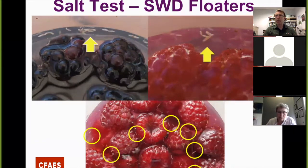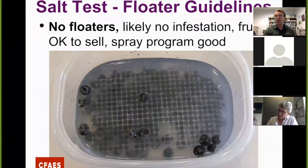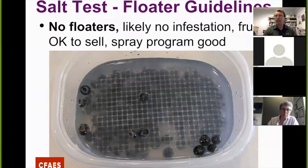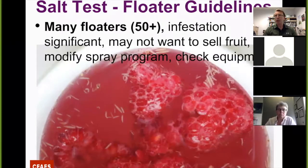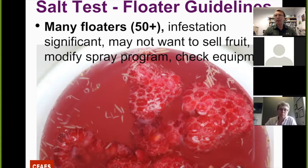Larvae are small, translucent, almost grain-of-rice size or smaller. You can see where there are no larvae floating and you have to look pretty carefully when there's a low population. Typically they get attracted to the edge of the container, so look at that area very closely. With a low infestation level, it's okay to sell the fruit — but you may want to refrigerate it and pay attention to your spray program and spray interval. If you've got hundreds of larvae, that's a situation where you don't want to sell this fruit, and you definitely need to look at modifying your spray program, chemical selection, and spray equipment.